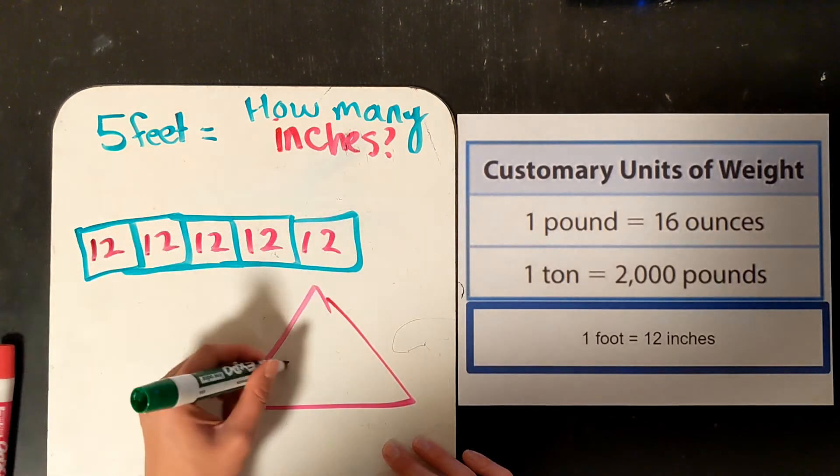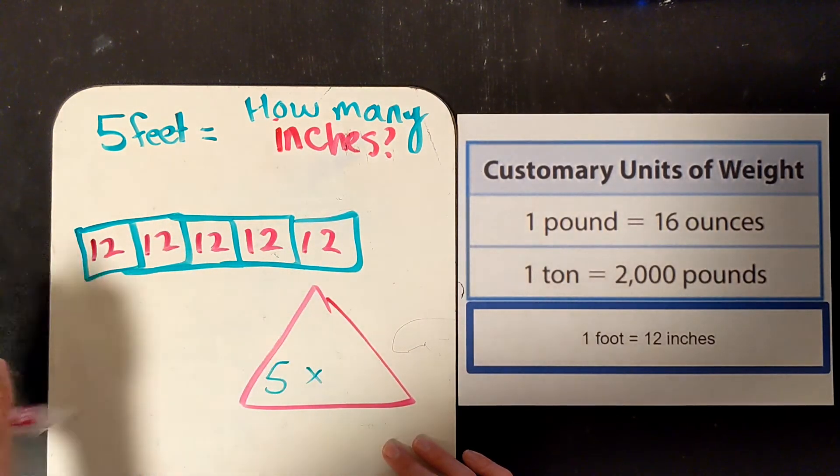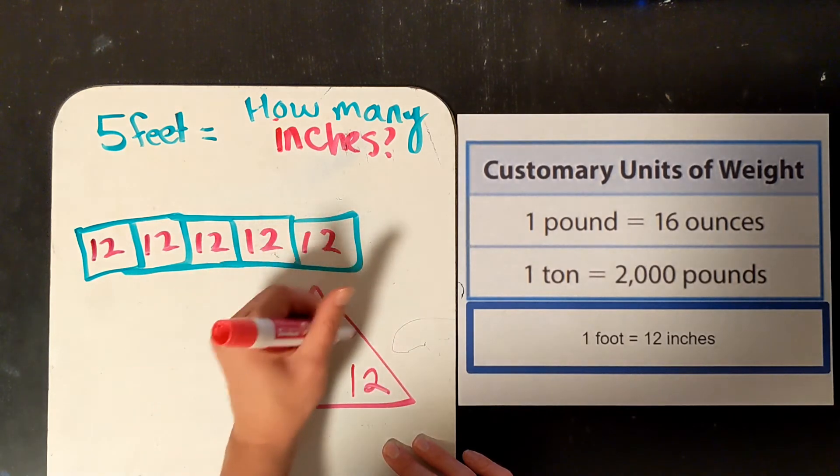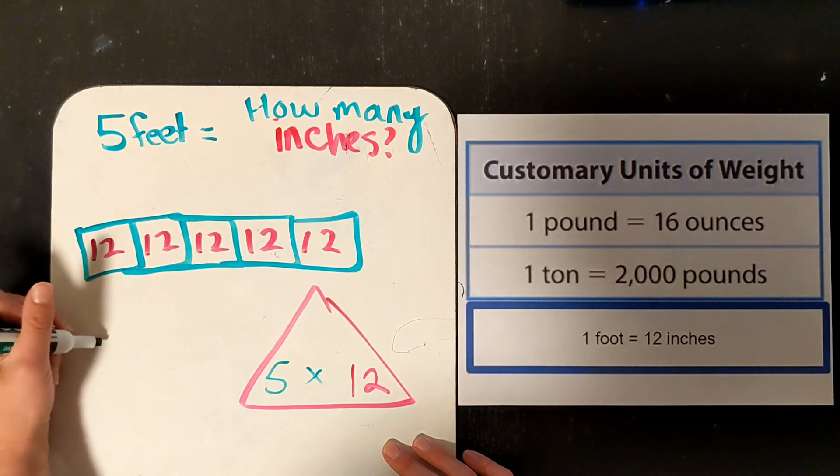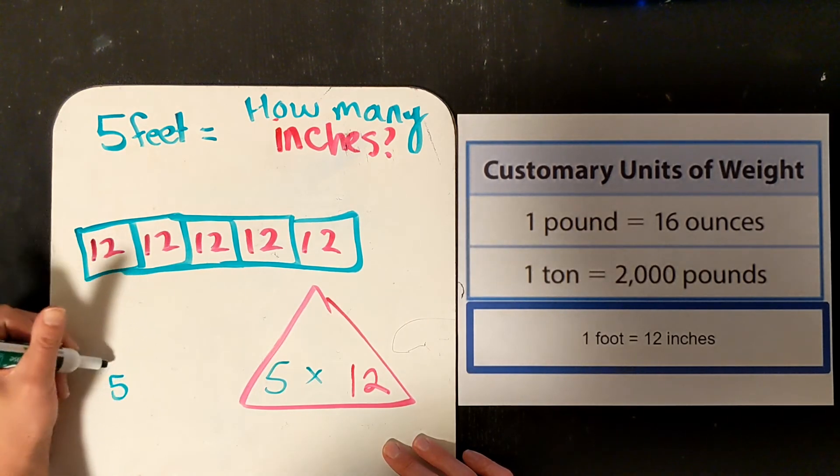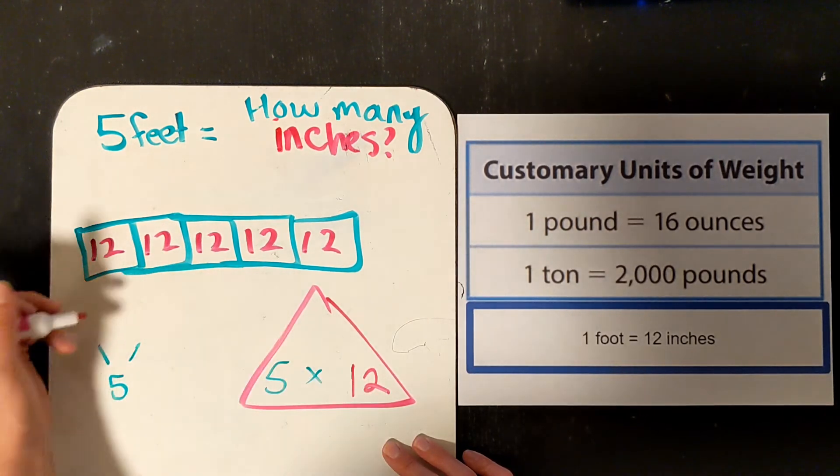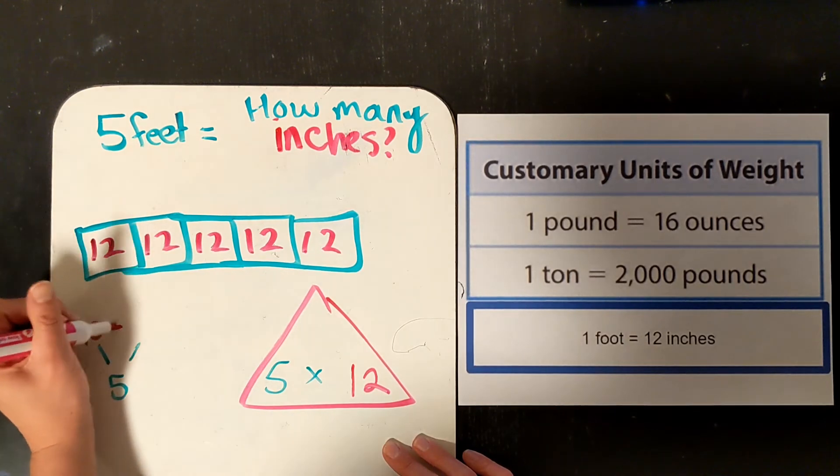So, 5 feet, 12 inches in each one. How many inches total? 5 times 12. I'm going to do partial products. So, 5 times 12. 12 in expanded form is 10 plus 2.